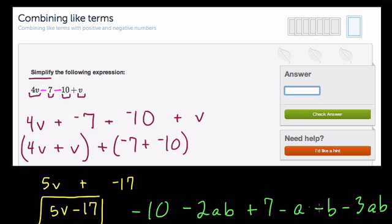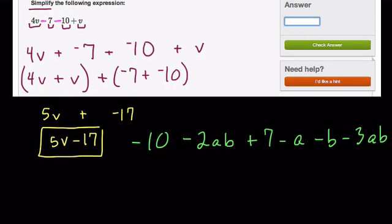So here, apply the same strategy. Think of everything in terms of addition. So negative 10, we start with that. Then we add negative 2ab, then we add 7, and then we add negative a, negative b, and negative 3ab becomes plus negative 3ab.